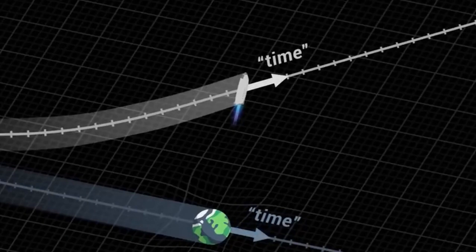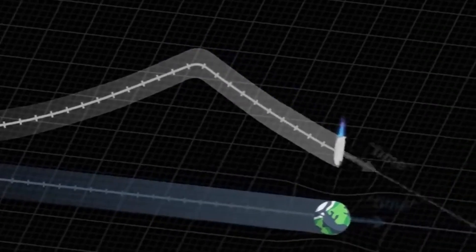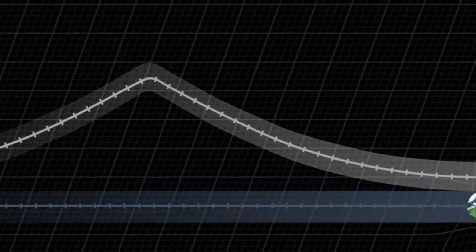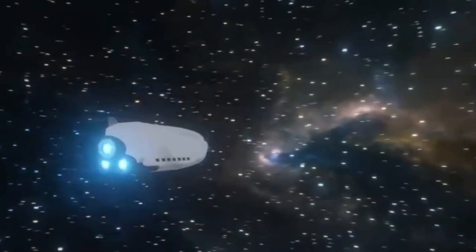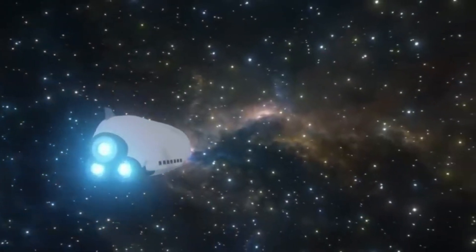After a while, they'll see nothing but darkness up ahead. The thing is, light waves simply won't catch up to them because they'll be moving at the same speed. In other words, there will be nothing but endless darkness before our engineer.